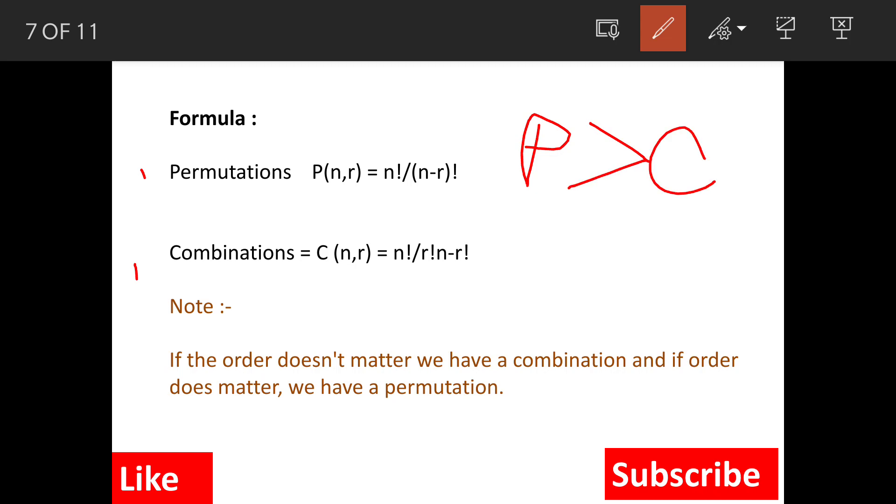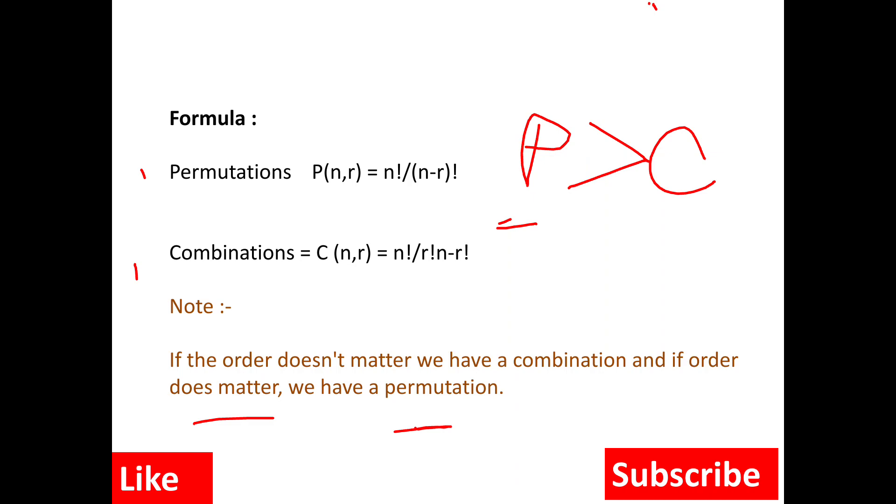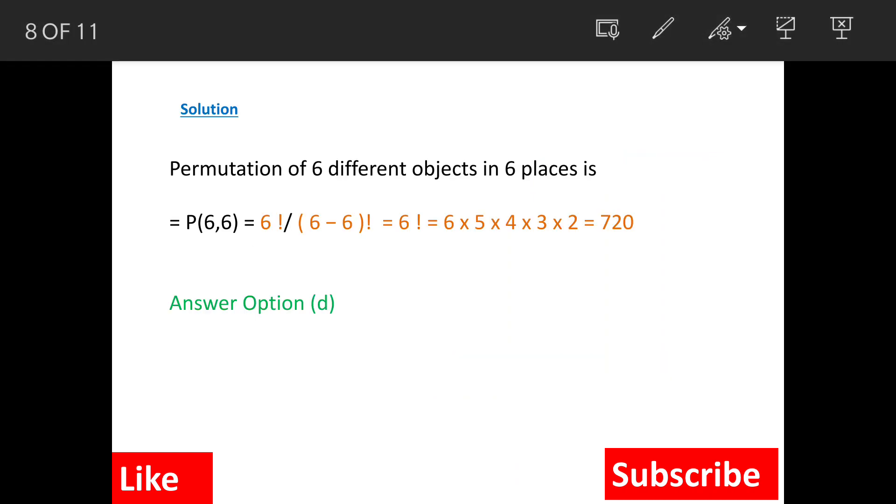So in this case, actually order is also important, so we'll find out the solution by using formula of permutations. So there are total six women, six wells, so it becomes factorial six divided by factorial six minus six.